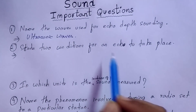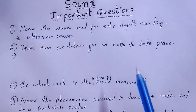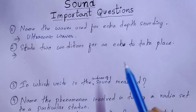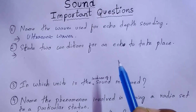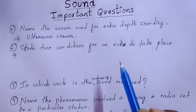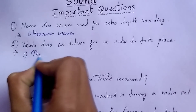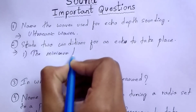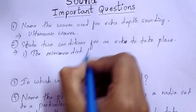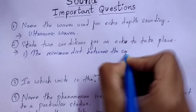The next question: state two conditions for an echo to take place. This is a very important question asked from the chapter on sound. It is repeated many times in board examinations, so study these properly.